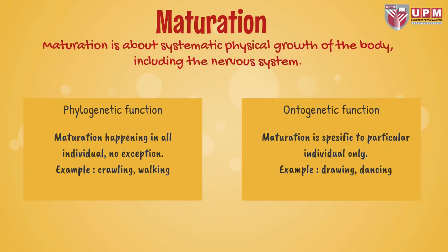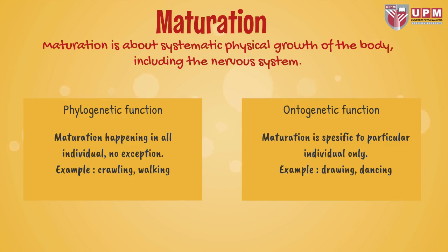Maturation refers to the systematic physical growth of the body, including the nervous system. Phylogenetic functions are maturational processes that occur in all individuals without exception — for example, crawling and walking. Ontogenetic functions are maturation processes specific to particular individuals only — for example, drawing and dancing.